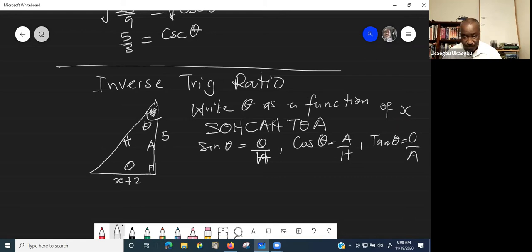So this side is the opposite. And this side is the adjacent. So that means that tangent of theta is opposite, which is x plus 2 over adjacent. The adjacent is 5.